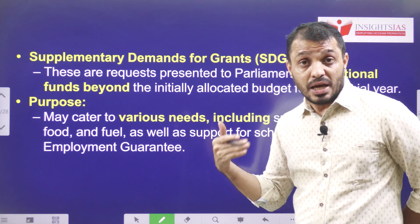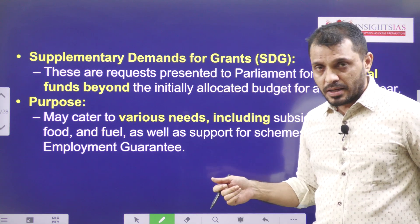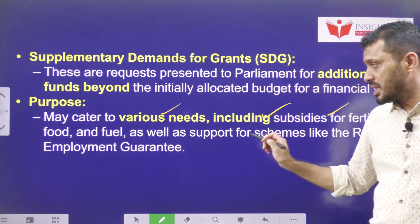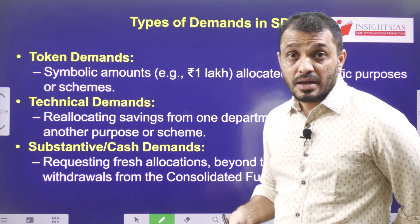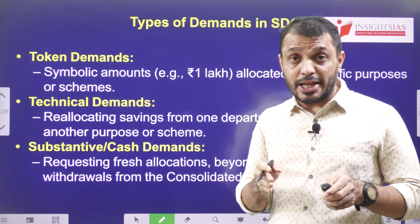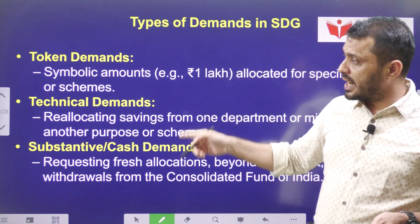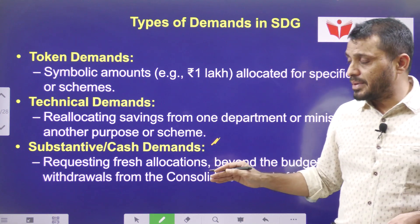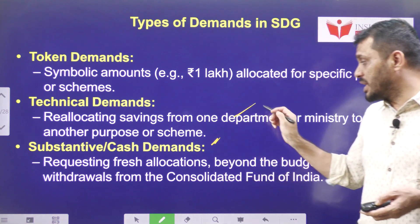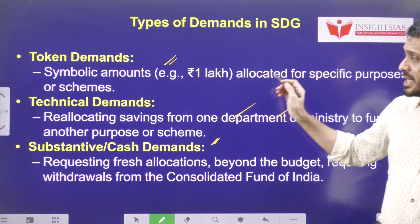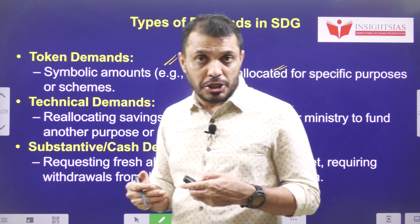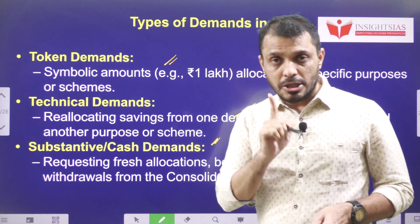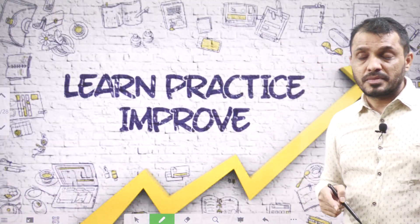Supplementary demand for grants are raised when the government is unable to meet its funding needs. The purpose is to cater to various needs including subsidies for fertilizers, food, and fuel, as well as supporting schemes like rural employment guarantee. Based on the nature and requirement, grants can be divided into token grants, technical demands, and substantive demands. Substantive demands involve a high amount of money; technical demands involve transferring savings from one department to another; token demands are symbolic routine allocations.